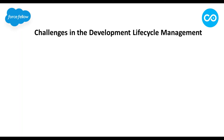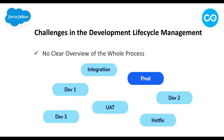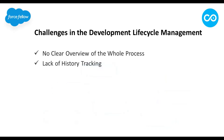Now let's discuss the basic challenges in general Salesforce development lifecycle management. The first is no clear overview of the whole process. Whenever we are going to build new functionality in Salesforce, we do not have any built-in tool where we can define how and where changes will be implemented and deployed. As shown in this image, we can have multiple orgs for our projects — production, integration, hot fixes, development orgs, and UAT orgs — but there is no built-in functionality to define the deployment flow.